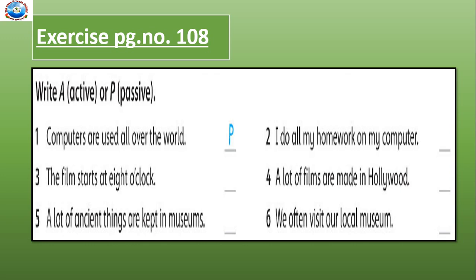Number 2: I do all my homework on my computer. I do — it is showing do, so here it is active. Number 3: The film starts at 8 o'clock. The film starts — so it is active. Number 4: A lot of films are made by Hollywood. Are made by Hollywood — so it is passive.